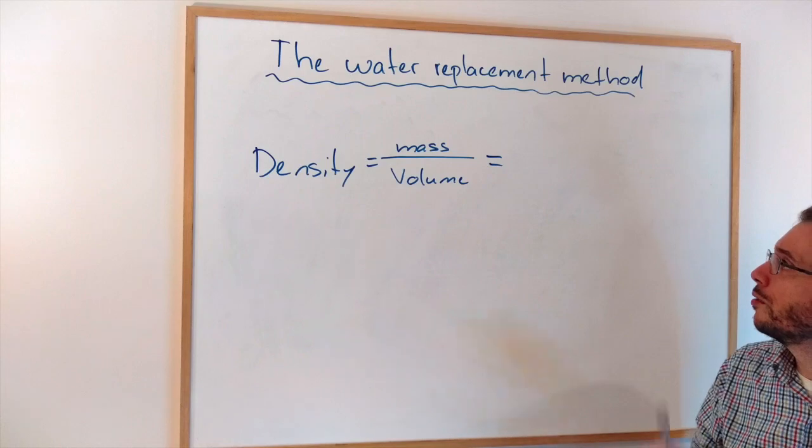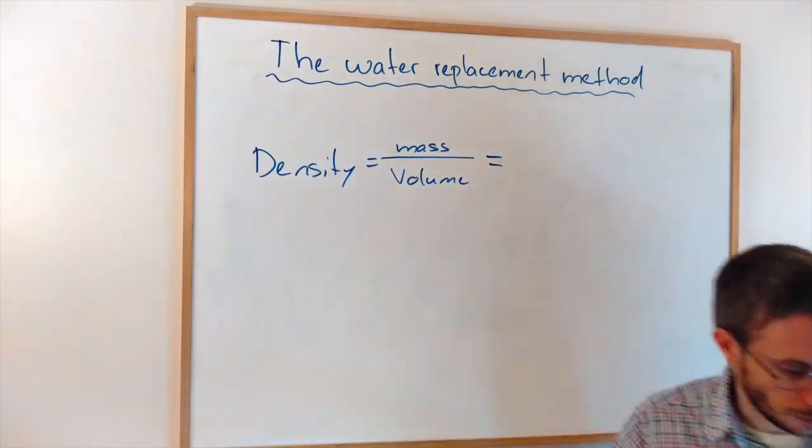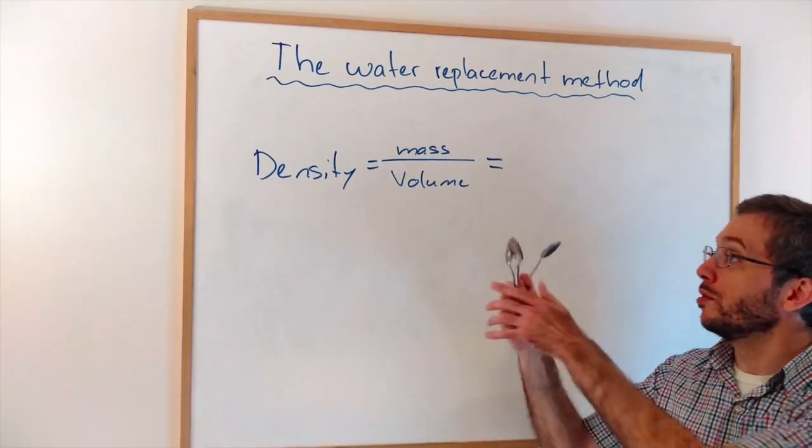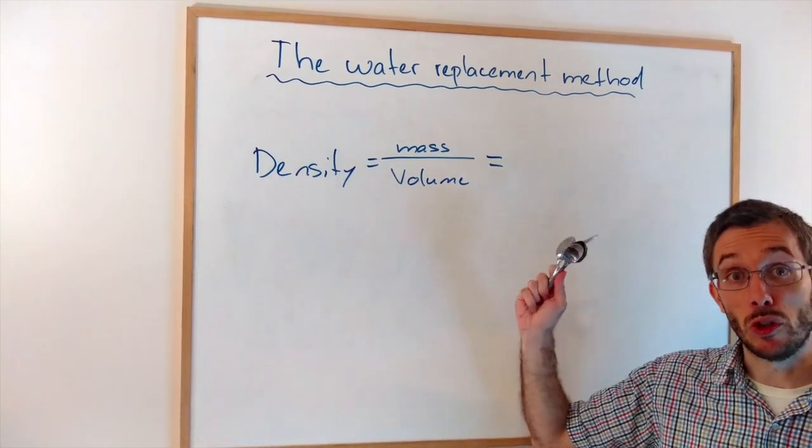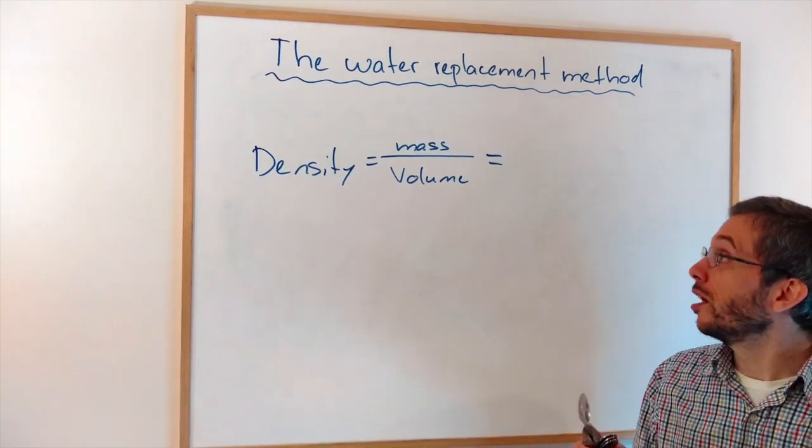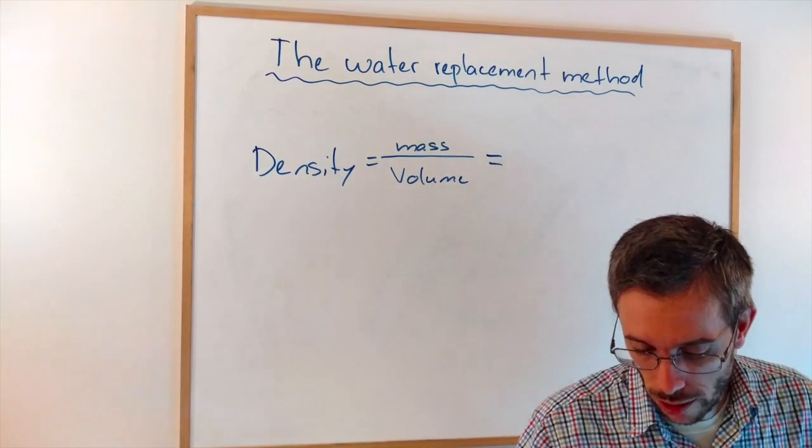Now let's use this method to figure out the density of my spoon. I'm not going to use one spoon, I'm going to use several spoons. Why? Because if you use more mass and we have also more volume, that means you'll have probably a higher precision and our result is going to be better. So if you can, use several objects at once.